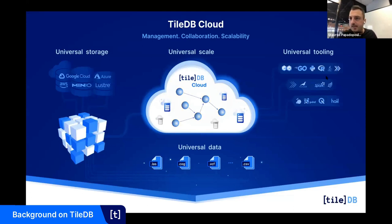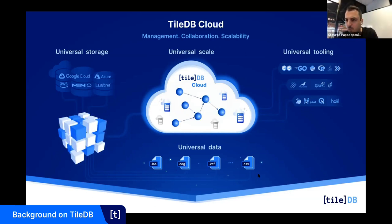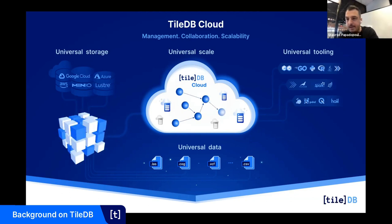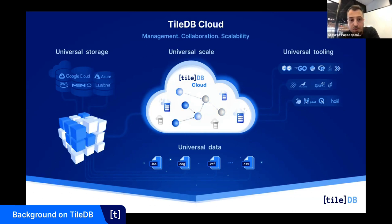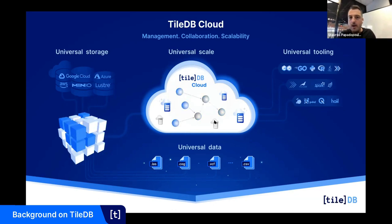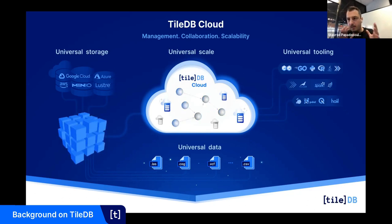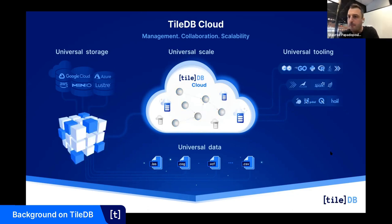Putting it all together: you can think of any kind of data format — LAS or COGs, VCF from genomics, CSVs for tables — and we convert everything using ingestors into some flavor of an array, either dense or sparse depending on the application. Those arrays are stored in a shared scalable file system like S3, Azure Blob Storage, Google Cloud Storage, or MinIO. We handle all governance and scalable computing in TileDB Cloud, which itself runs TileDB Embedded for storage and access. All integrations with tools you prefer are available.